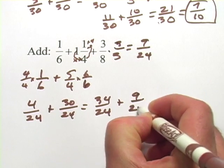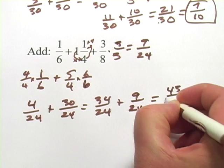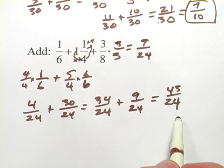I can add that here. 34 24ths plus 9 24ths. That's 43 24ths. Now this is an improper fraction.